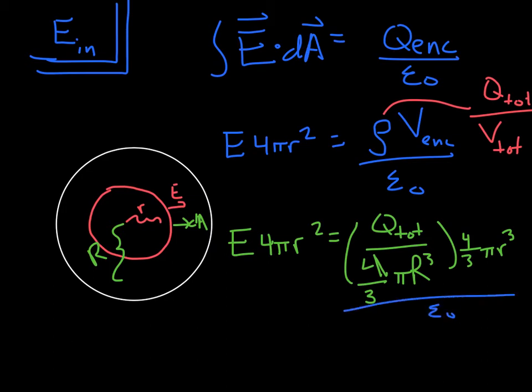So if we look for what cancels out, you'll see 4 thirds pi, 4 thirds pi's cancel. I'm going to cancel out two of those. You get your electric field. Your electric field inside equals q tot, total charge, times r all over 4 pi radius of the sphere cubed epsilon naught.